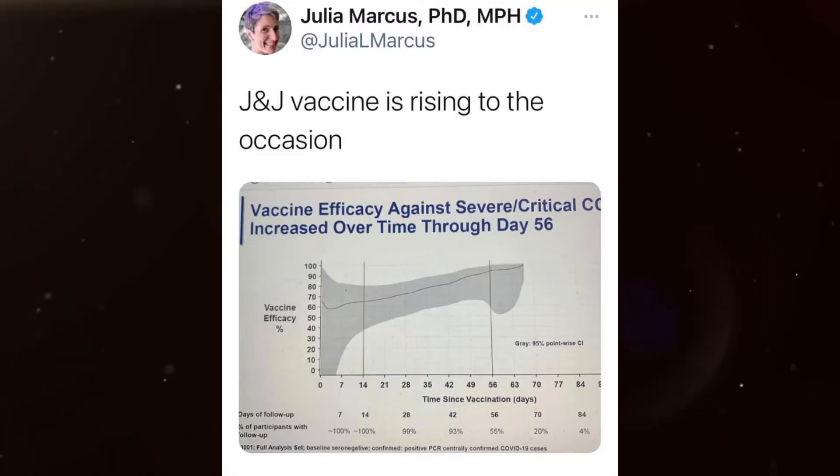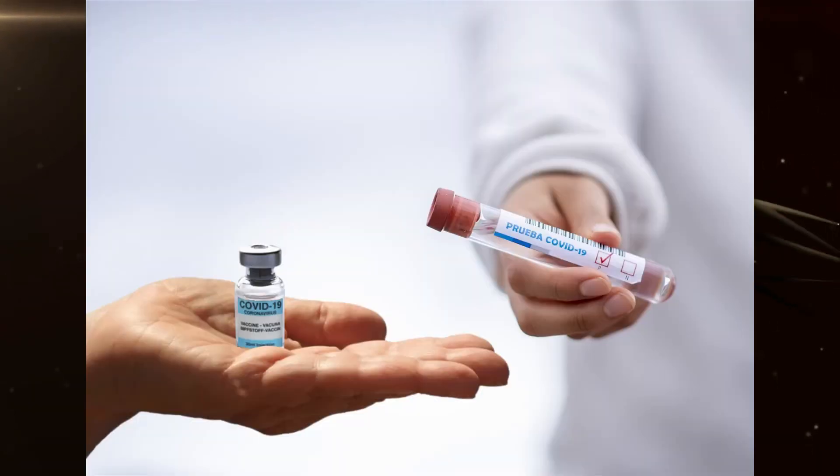Having yet another vaccine available, even if it's not as effective as the others, means that America can keep moving forward with its vaccination regime. As it stands now, approximately 1 in 7 Americans have been vaccinated.